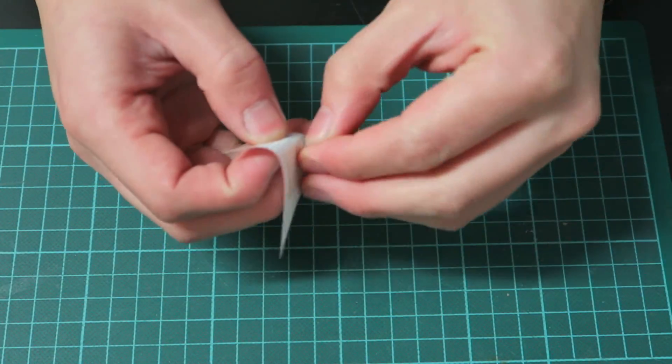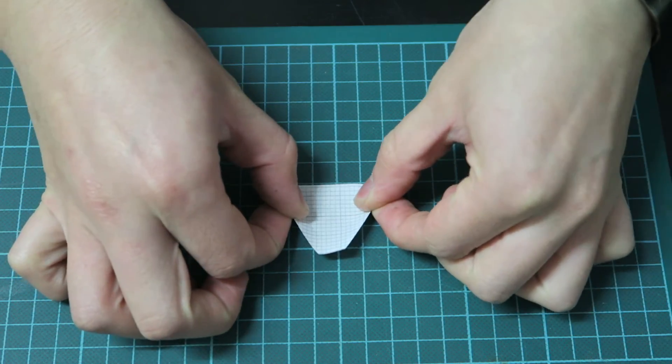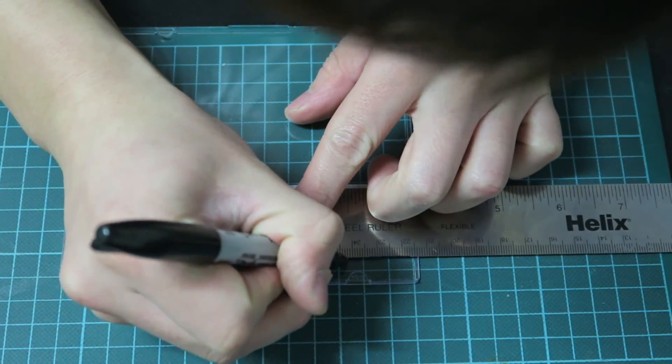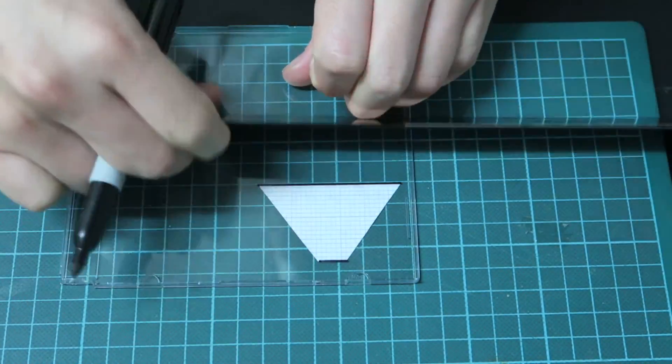Now I've actually used a bit of double-sided tape here because I didn't want the template to shift about. I'm going to put the plastic case on top and draw the outline of the shape with the ruler and the marker pen, and you'll have to do this four times.